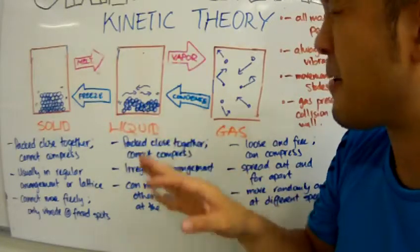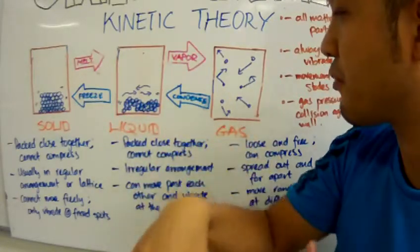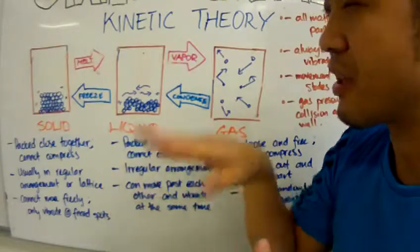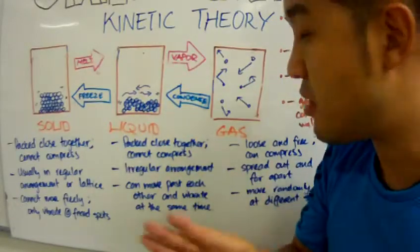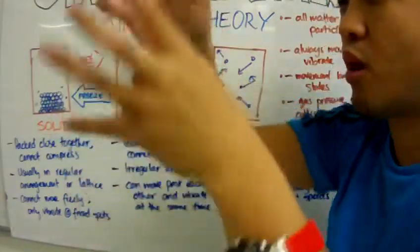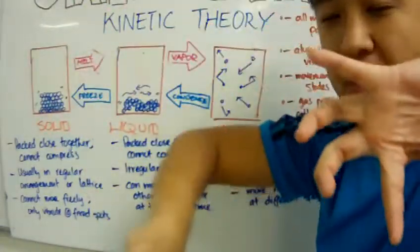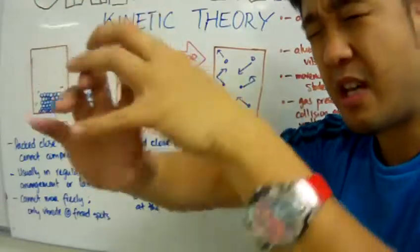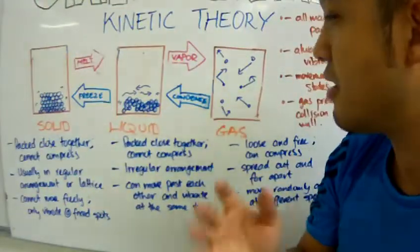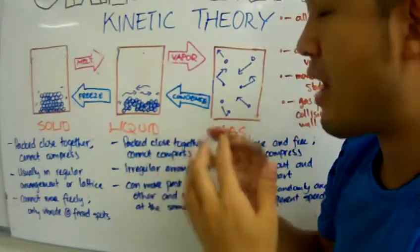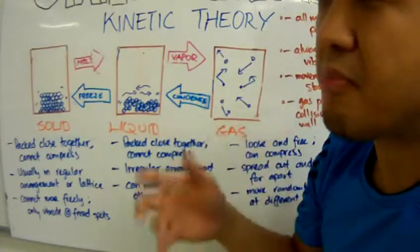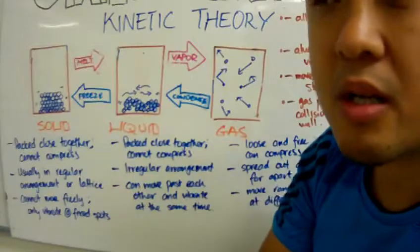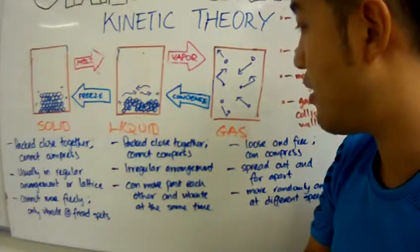But you also notice that liquids kind of flow. That's because it has an irregular arrangement. It does not have a regular arrangement. So one moment that particle is there, the other moment is down there, another moment is up there, on the left, on the side, on the right. So it doesn't have a regular arrangement. The arrangement depends on what you're doing with it or what's happening to it.